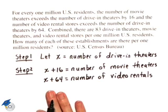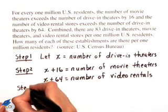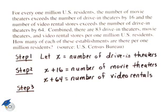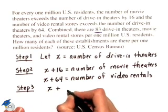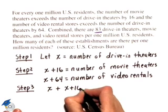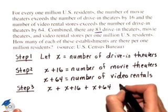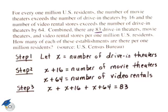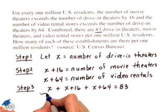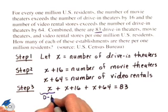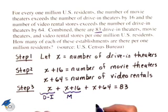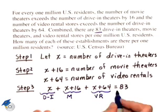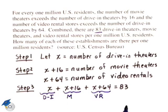we want to write an equation just in X that models all of these conditions. Remember, back in our original problem, we were told combined there are 83 drive-in theaters, movie theaters, and video rentals. That means if we add all three of these quantities, X plus X plus 16 plus X plus 64, we should equal 83. X represents the number of drive-in theaters, X plus 16 represents the number of movie theaters, and X plus 64 represents the number of video rental stores. If we take all three quantities and add them together, we should equal 83.